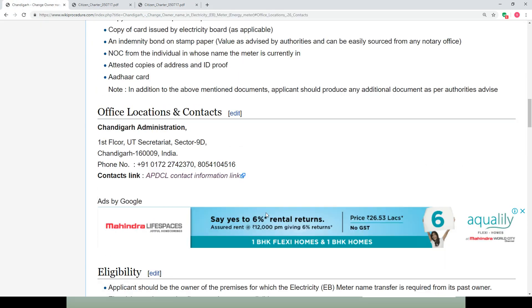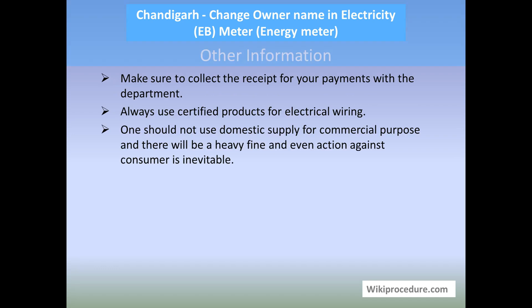Online resources: All the links seen so far will be useful for completing the procedure and have been provided at appropriate places to save your valuable time. Other information: Make sure to collect the receipt for your payment with the department. Always use certified products for electrical wiring. One should not use the domestic electrical supply for commercial use, as it is an offense and the consumer will be punished. We hope this video helped you. Don't forget to give us a like and subscribe for more videos. Thank you for visiting wikiprocedure.com to know how to change owner name in electricity connection in Chandigarh.